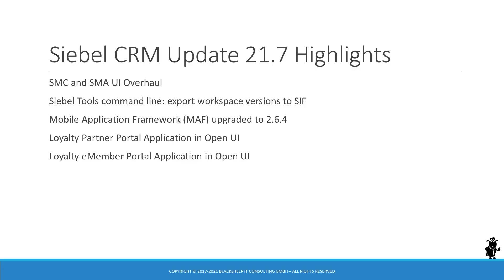Welcome to the Siebel CRM 21.7 Update Summary, presented by the Siebel Hub. On July 19, 2021, Oracle released the 7th update for Siebel CRM 21.7 for download on their My Oracle Support Portal. According to the release notes, 21.7 is a bug-fix only release with no major features or enhancements. A review of the release notes, the updated Siebel bookshelf, and a test run of the optional repository upgrade utility reveals the following noteworthy changes.